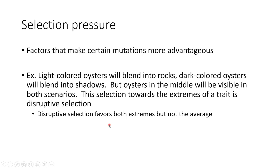The final type is disruptive selection — we see both extremes favored but not the average trait. A good example is oysters. Light-colored oysters blend in with rocks, and dark-colored oysters blend in with shadows, so both are protected. Medium-colored oysters are visible in both scenarios — completely disadvantageous. So oysters get pushed toward very light or very dark coloring. With disruptive selection, we see lots of organisms at both extremes but very few with the average trait.